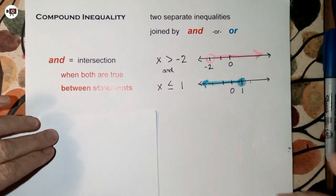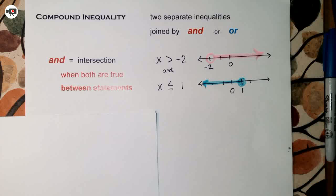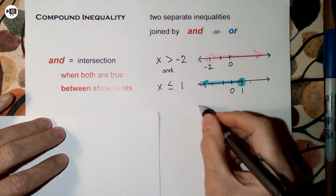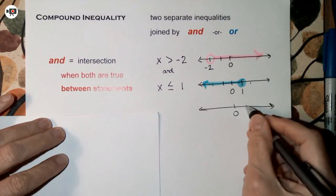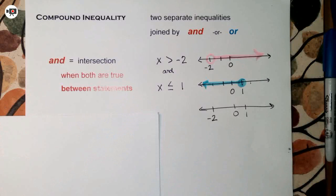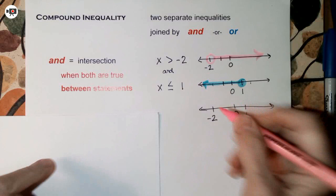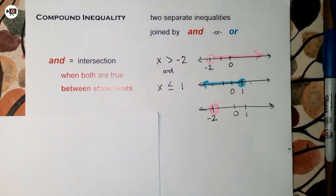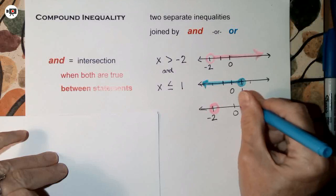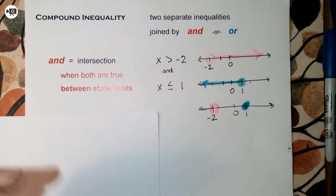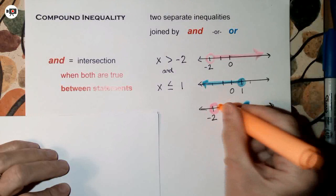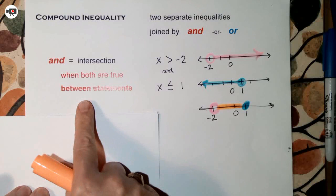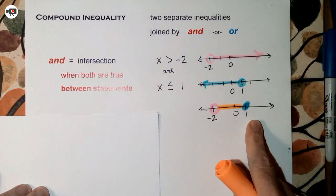So here is x less than or equal to 1 graphed. Now I'll draw a third number line to combine them. At the same time, x is greater than negative 2 (open circle) and x is less than or equal to 1 (closed circle). What lies between them is what counts — this is a between statement, an AND statement: the values between negative 2 and positive 1.